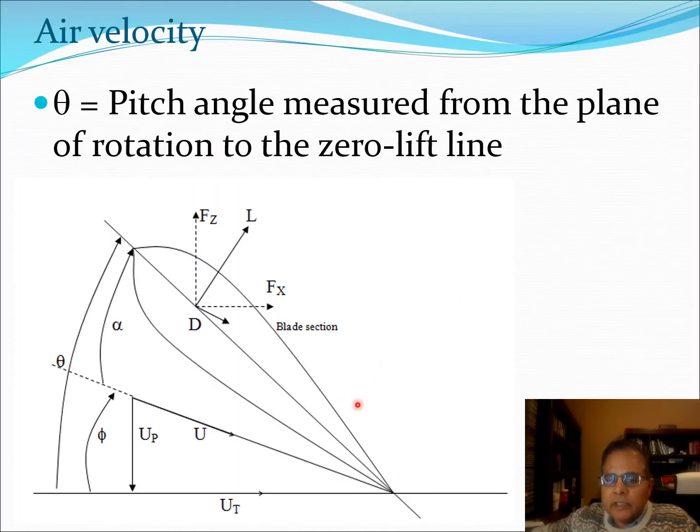In the previous lecture we had the airfoil section and we showed that this airfoil section is at some pitch angle theta relative to the plane of rotation or the zero lift line. So between the plane of rotation and the zero lift line the angle is essentially theta. We are assuming a symmetric airfoil cross section. Now we'll discuss all the further notations as we go along in today's lecture.